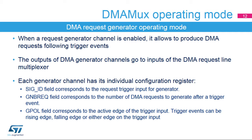On its output, the DMA request generator produces DMA requests following trigger events on DMA request trigger inputs. The DMA request generator has multiple channels, and DMA request trigger inputs are connected in parallel to all channels. The outputs of DMA generator channels go to inputs of the DMA request line multiplexer. Each DMA request generator channel has an enable bit. The DMA request trigger input for generator channel X is selected through the SIG ID field of the corresponding generator channel's control register. Trigger events on a DMA request trigger input can be rising edge, falling edge, or either edge.